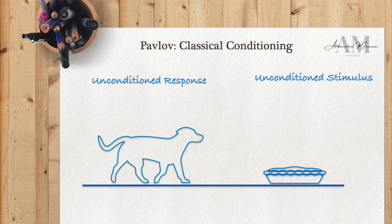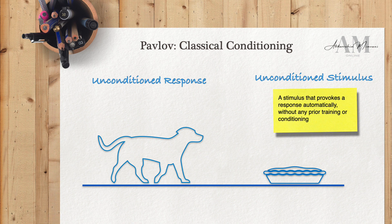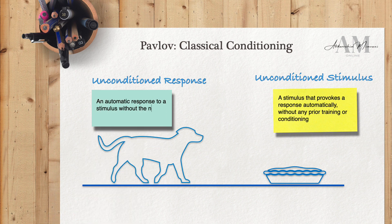An unconditioned stimulus is one that elicits a response automatically, without any prior training or conditioning. An unconditioned response, on the other hand, is an automatic response to a stimulus without the need for any training or prior experience.